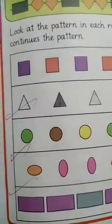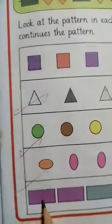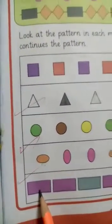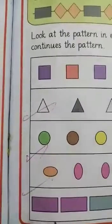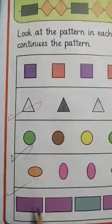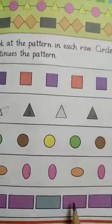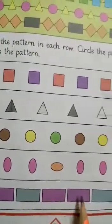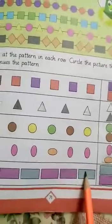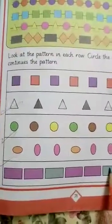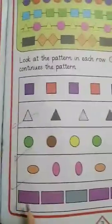And our last row. Purple rectangle, purple rectangle, gray rectangle, purple purple, gray, and next. How will the pattern complete? Let's see.